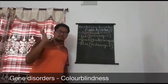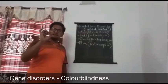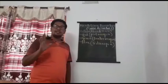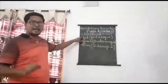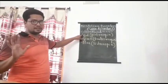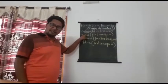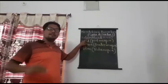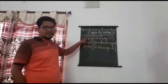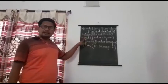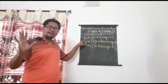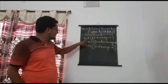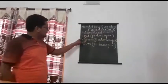Night blindness, called nyctalopia in medical terms, is caused due to deficiency of vitamin A (retinol) — but our topic is color blindness. Color blindness is an X-linked recessive trait in which people are not completely blind or night blind, but are blind for a few colors of the visible spectrum. Some people cannot see red color by birth — that condition is called red color blindness. Color blindness can be of three types: red, green, and blue color blindness.